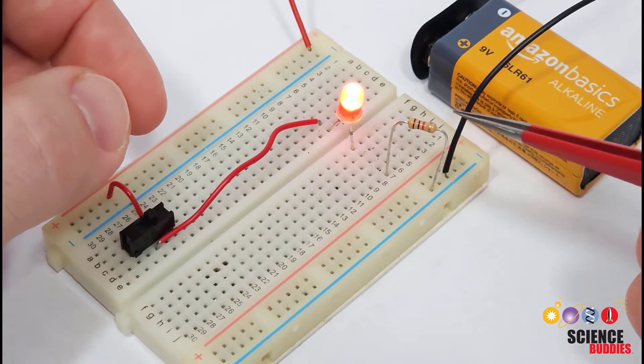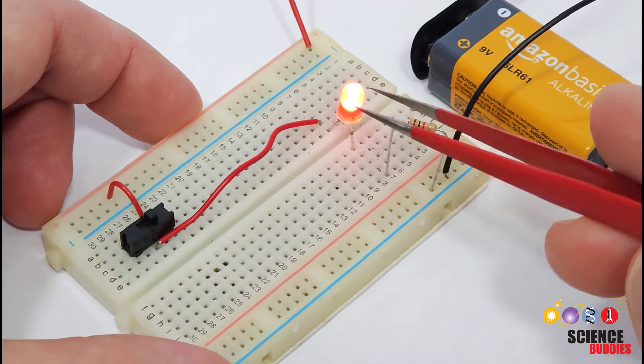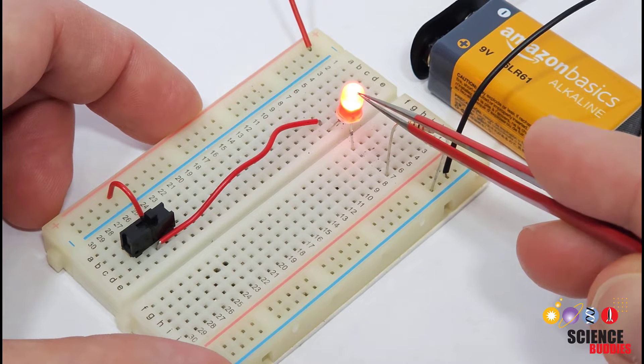If you've built LED circuits before, you may know that they require a current limiting resistor to prevent too much current from flowing through and burning out the LED.